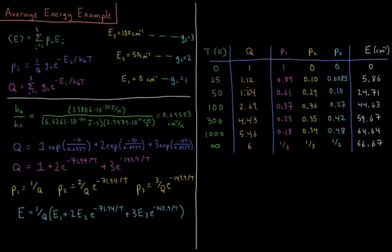At 50 Kelvin, we see our Q goes up and our probabilities change. 60% in the ground state, 30% in the second state, 10% in the highest energy state. Average energy is 25 wavenumbers, halfway between here and here. Temperature's going up. We're seeing our energy go up as our probabilities change.